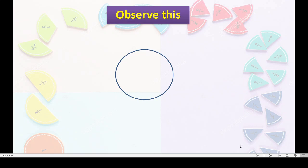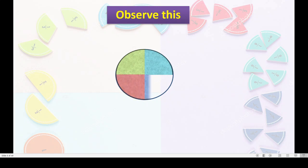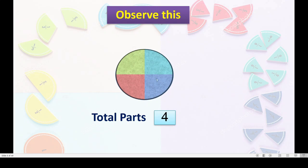Here again you can see a circle. I will divide this into parts — see the different colors. We have divided this circle into four equal parts. The parts should be equal in fractions. We can see four equal parts, each with a different color. Total parts: four. Are they equal? Yes, all parts are equal.